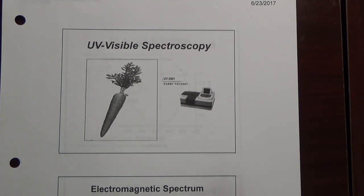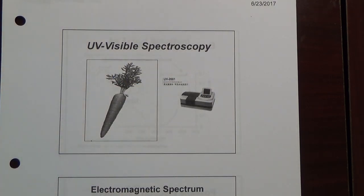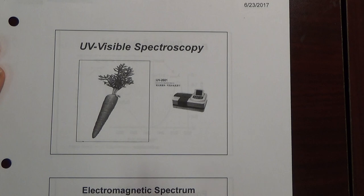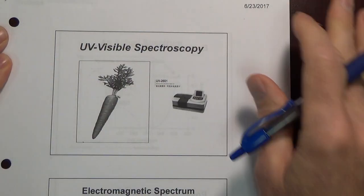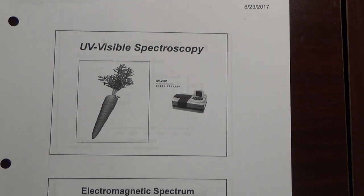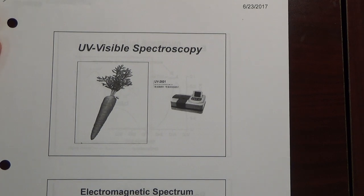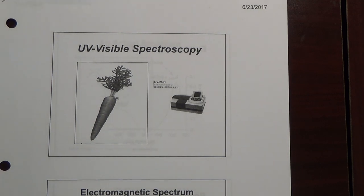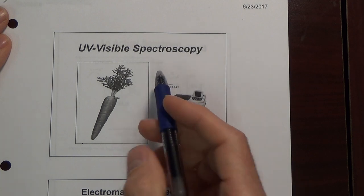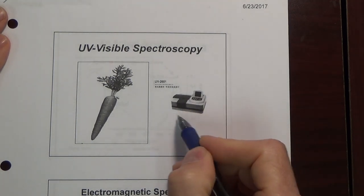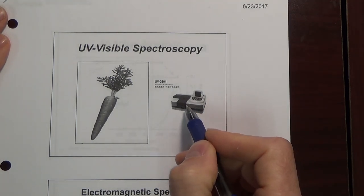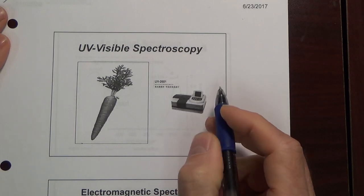Hi guys, in this video we will look at UV-Vis spectroscopy. On the first slide I show a carrot which is orange. My handout is black and white, as yours likely is if you printed it. You can see the colored version from the file posted on the Teams page. We'll talk about ultimately why a carrot is orange. This is an example of a UV-Vis spectrometer, very similar in size to an IR instrument.